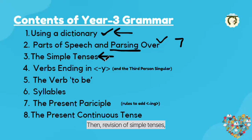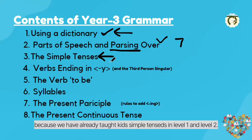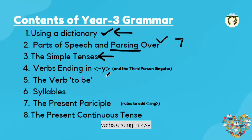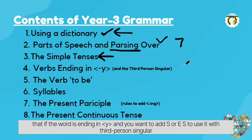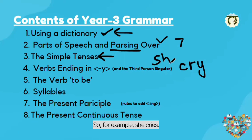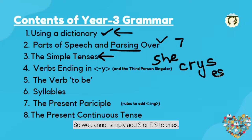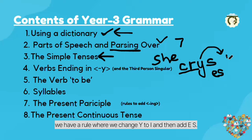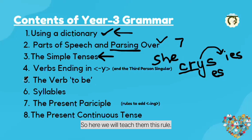Then there is a revision of simple tenses, because we have already taught kids simple tenses in level 1 and level 2. Next is verbs ending in Y — this is a new thing in year 3. When a word ends in Y and you want to add S or ES for third person singular in present tense, for example 'she cries', we have a rule where we change Y to I and then add ES. So here we will teach them this rule.